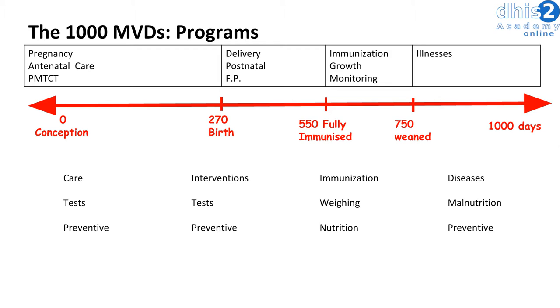By around 550 days, the child should be fully immunized. You will want to ensure that the child receives their full set of vaccinations. You also might perform growth monitoring to ensure their nutrition is proceeding as planned.